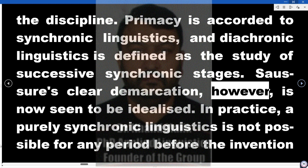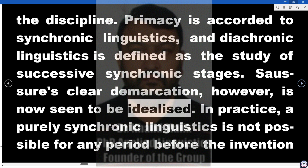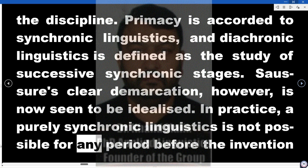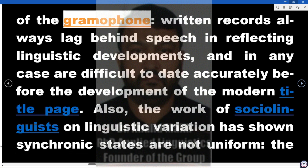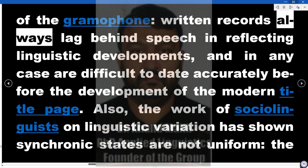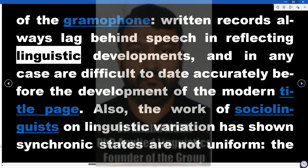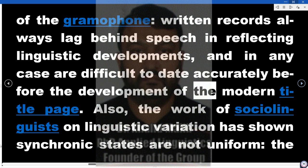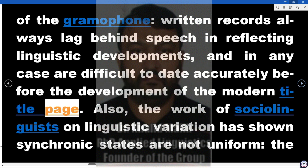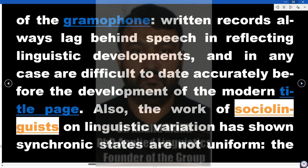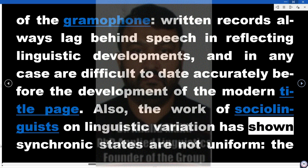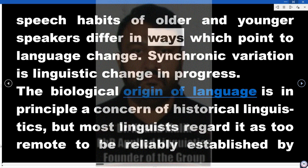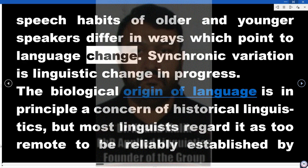Saussure's clear demarcation, however, is now seen to be idealized. In practice, a purely synchronic linguistics is not possible for any period before the invention of the gramophone. Written records always lag behind speech in reflecting linguistic developments, and in any case are difficult to date accurately before the development of the modern title page. Also, the work of sociolinguists on linguistic variation has shown synchronic states are not uniform — the speech habits of older and younger speakers differ in ways which point to language change.